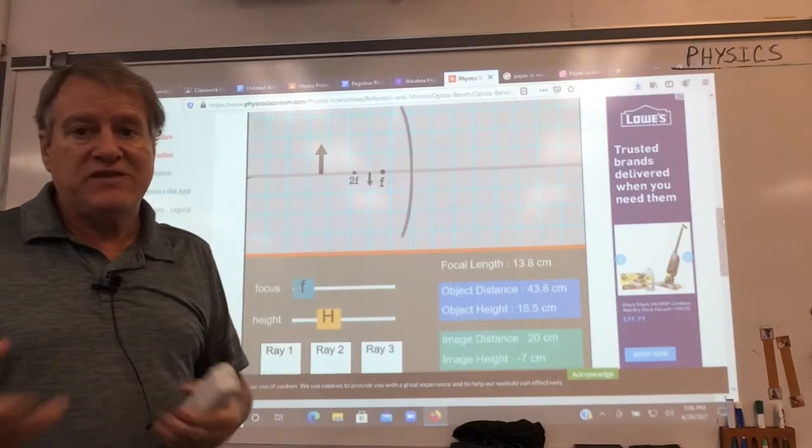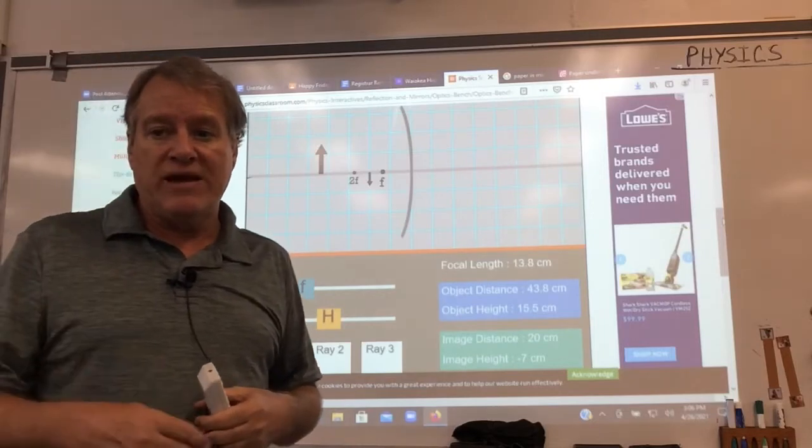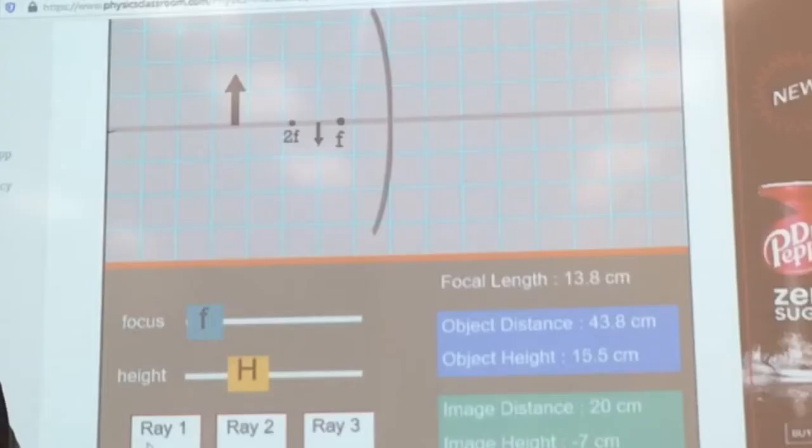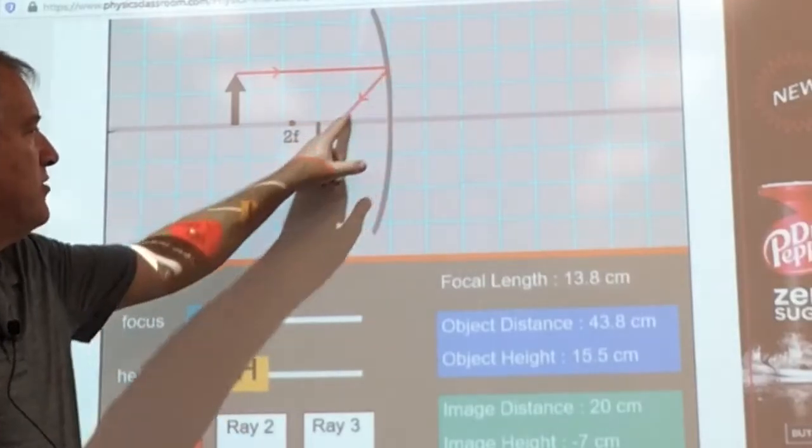I like this one because you can move things around, but again, remember for ray diagrams, the first ray always goes to the mirror, then through the focal. So here we go. Let's draw ray one. Notice to the mirror and through the focal point.